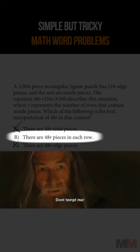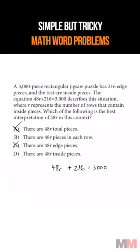You might be tempted to pick B because that expression is talking about the rows, but you got to read it carefully because there are only 48 pieces in each row, not 48 times R.